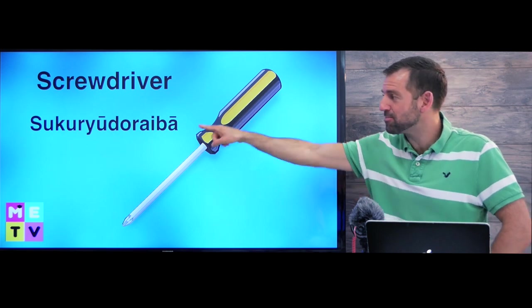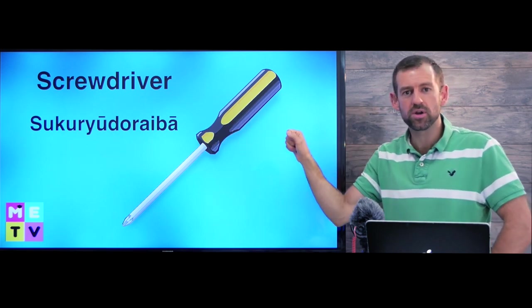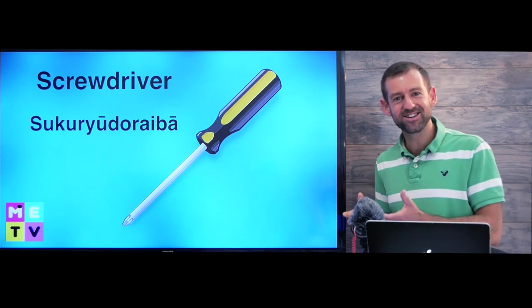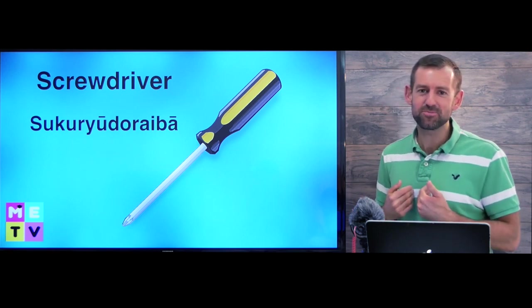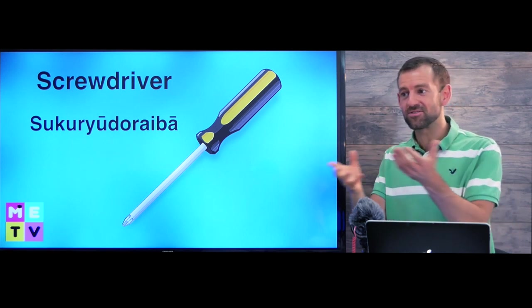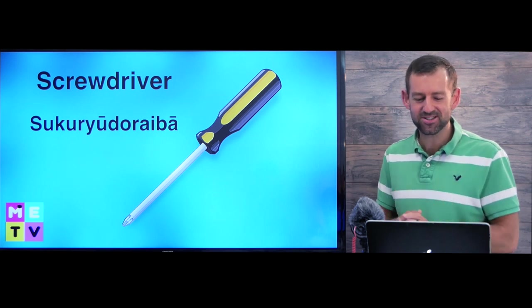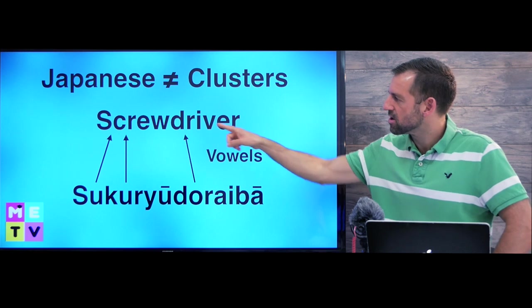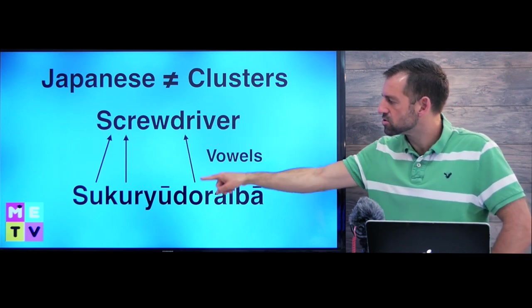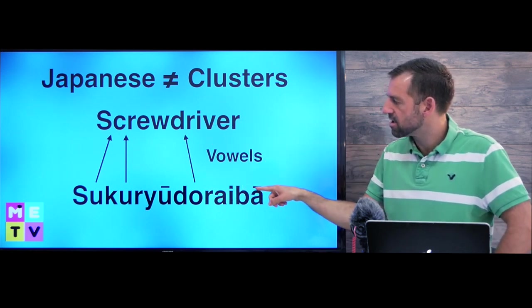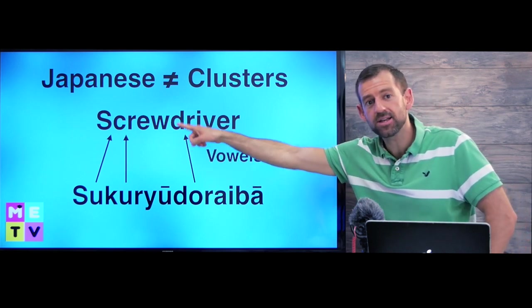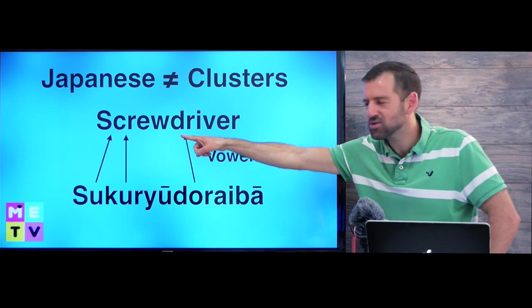But in Japanese, this is called sukuruidoraiba. Sukuruidoraiba. Did you hear that? They stole the word from English. But we English speakers, we steal words from lots of other languages as well. It's okay to steal words. But this is very interesting. Look what they're doing. Screwdriver. Sukuruidoraiba. They're putting vowels in between the consonant clusters. Isn't that interesting?